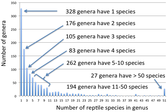The scientific name or scientific epithet of a genus is also called the generic name; it is always capitalized. It plays a fundamental role in binomial nomenclature, the system of naming organisms, where it is combined with the scientific name of a species.